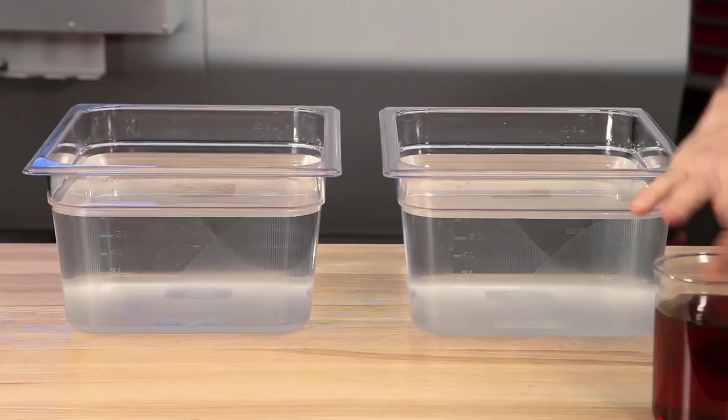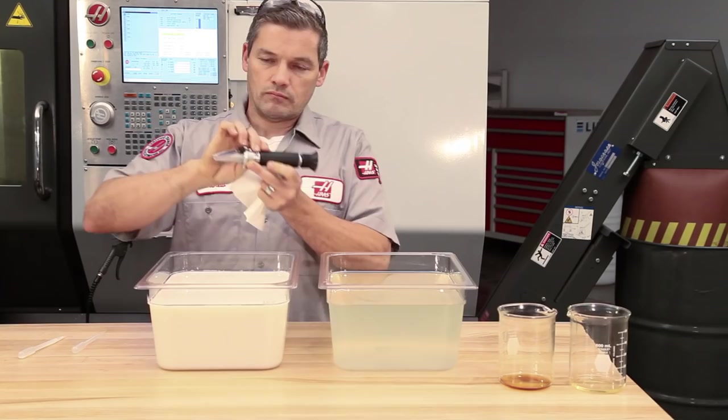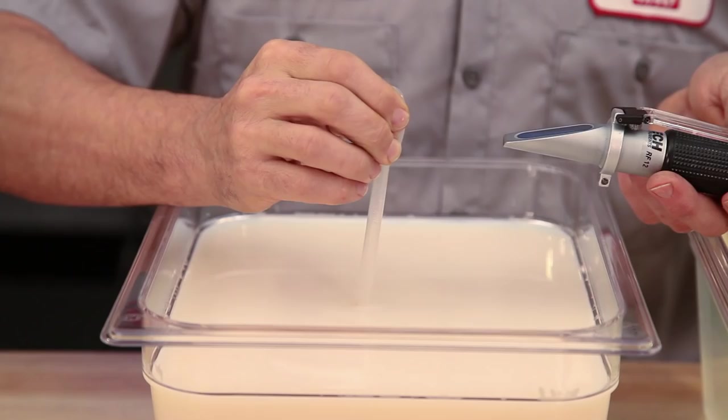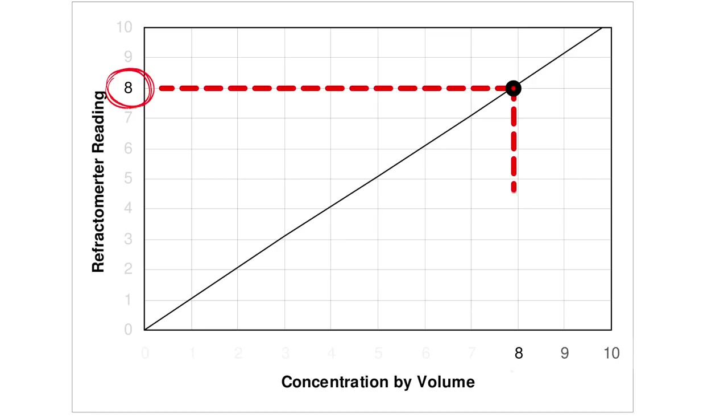This soluble oil coolant shows a reading of 8% BRICS. When you look at the manufacturer's chart for this coolant, 8% BRICS equals 8% actual concentration, or 1 to 1.